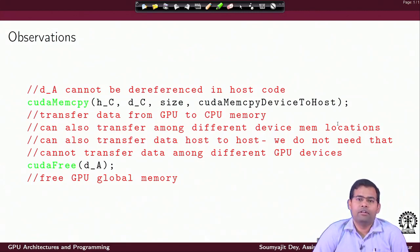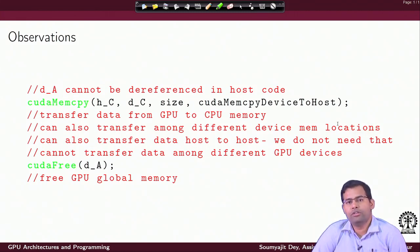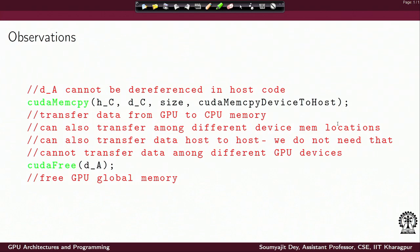We can also do a transfer between two different device memory locations on the same device using cudaMemcpyDeviceToDevice. However, I cannot use cudaMemcpy to copy data from one GPU device's memory to another GPU device's memory, because they are two different physical devices and cudaMemcpy only supports transfer between one host and one GPU. In that case, data must first be copied from device one to the host, and then from the host to device two.